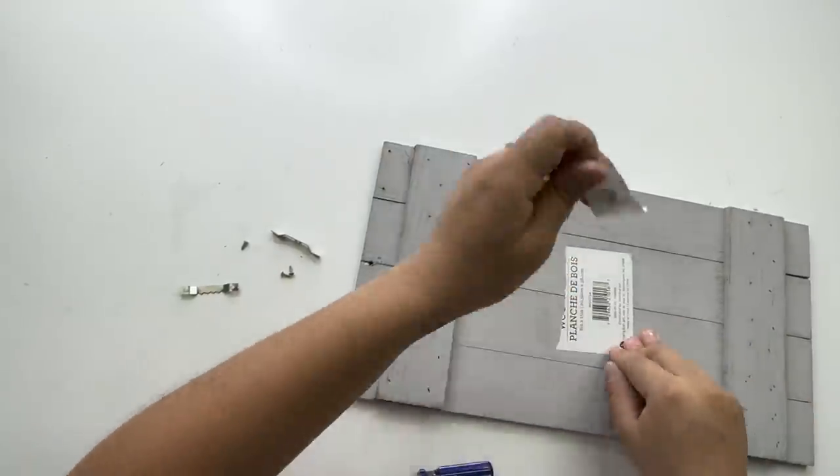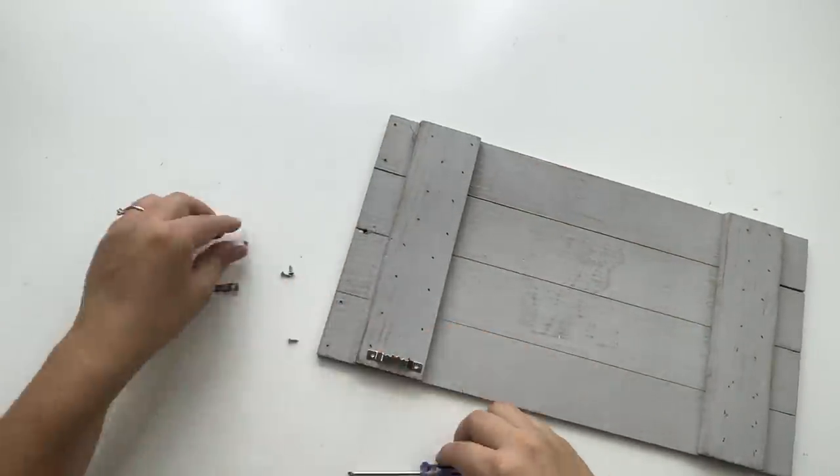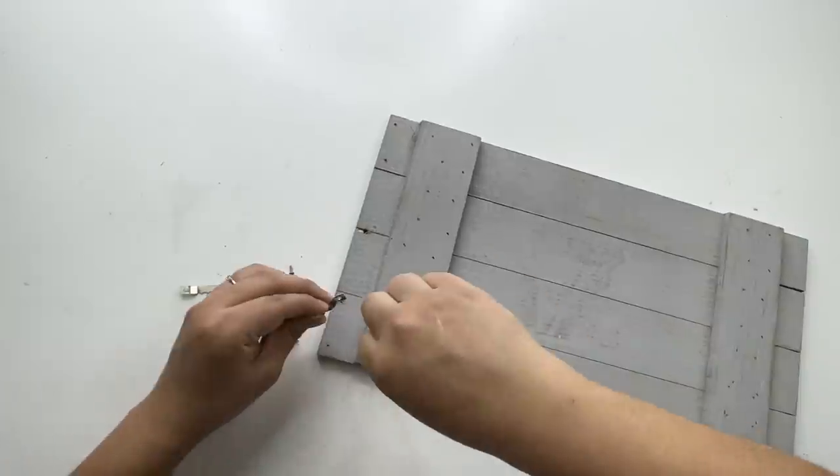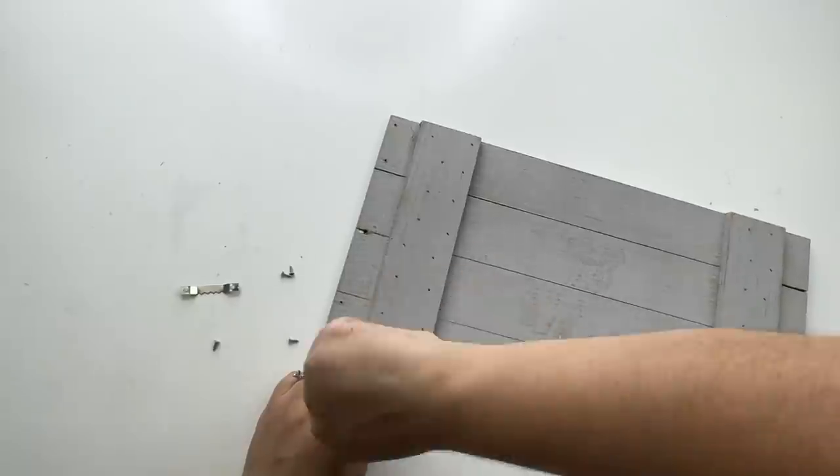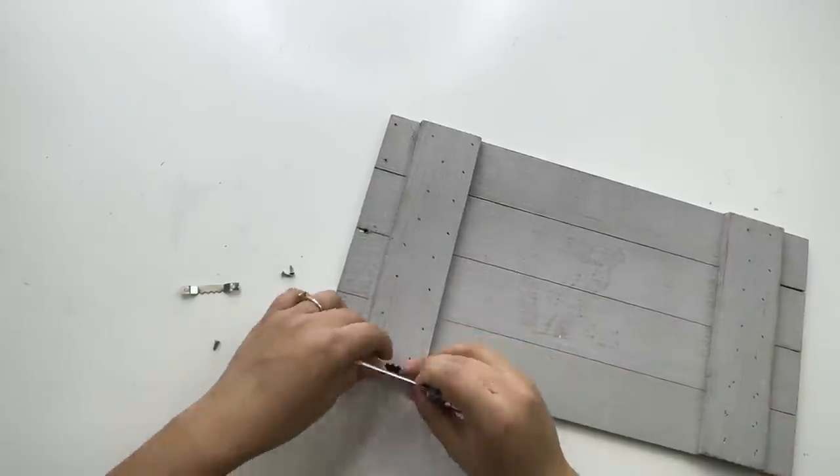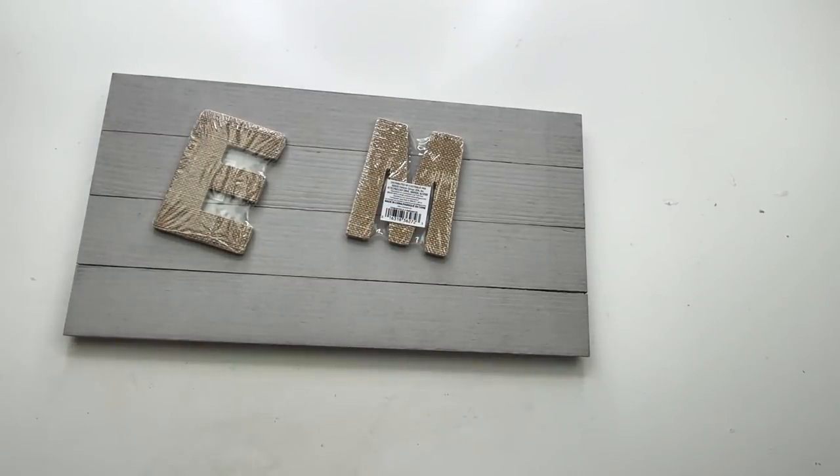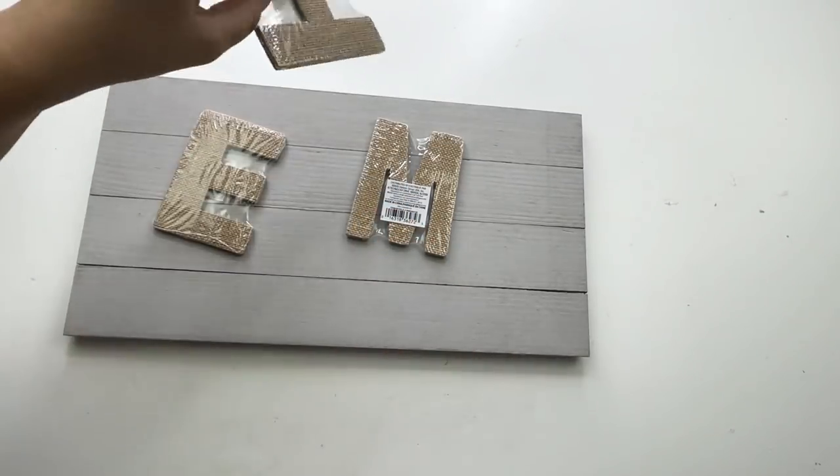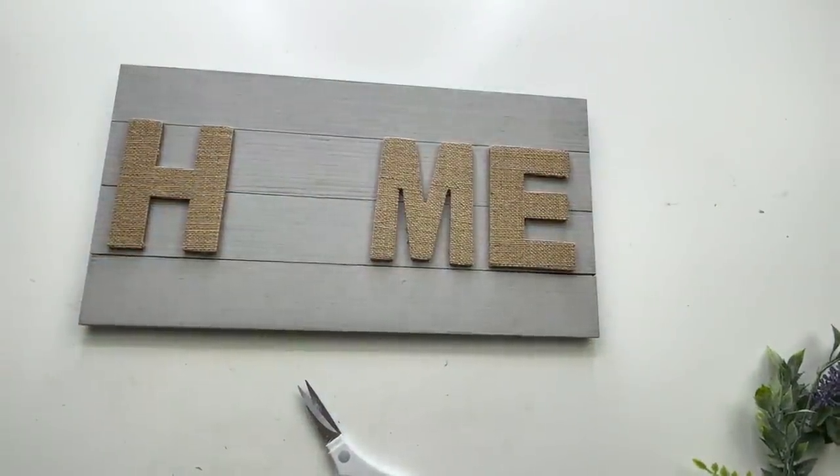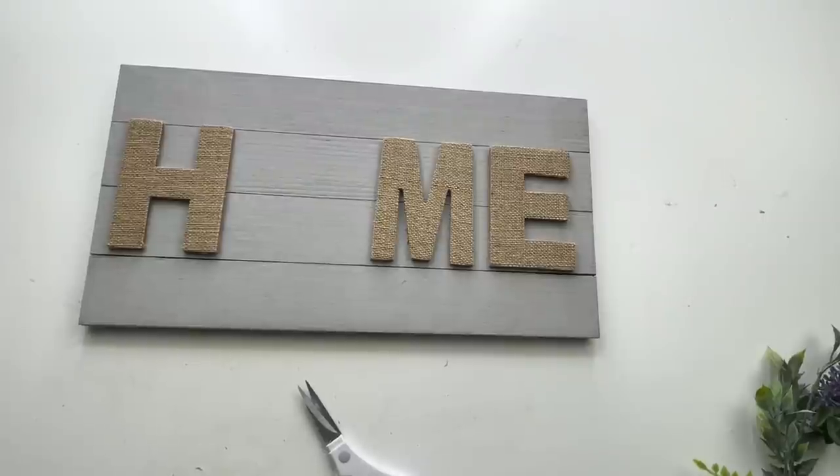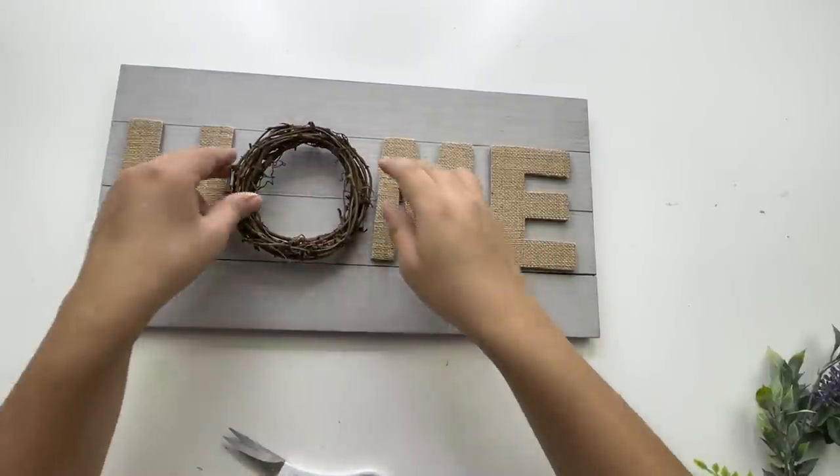I'm going to start by removing the sawtooth hooks on the back and then add it on the other side so I can use this sign horizontal instead of vertical. I'm going to add the word home in the front. So for the letters, I'm using these beautiful burlap letters that I got from Walmart. They were either 97 or 98 cents each, and I'm only using the H, the M, and the E. For the O, I will be making a small little wreath.